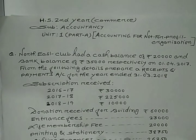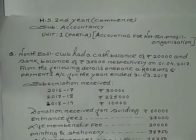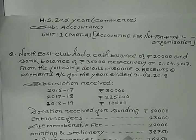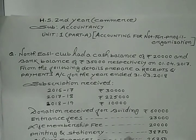If you receive cash, then it will be recorded on the debit side of Receipt and Payment Account. Related to payment — cash payment — that will be recorded on the credit side of Receipt and Payment Account. While you prepare Receipt and Payment Account, it starts with opening cash and bank balance and ends with closing cash and bank balance.